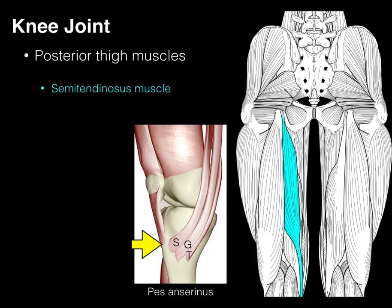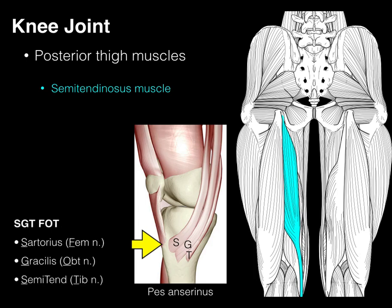The pes anserinus evidently looks like the foot of a duck. Remember, this is Sargent-Fott — S-G-T — Sargent for the sartorius, gracilis, and semitendinosus, and Fott for the three different nerves that innervate these muscles: femoral, obturator, and tibial. This is a clinical question that's sometimes tested on the boards.